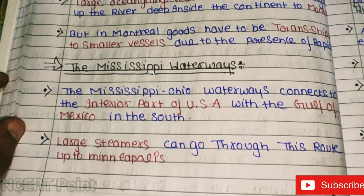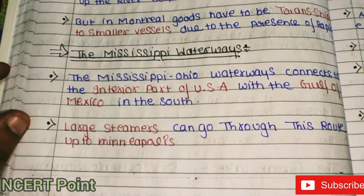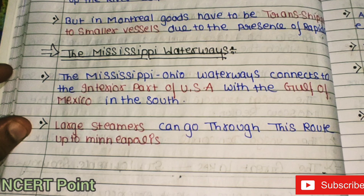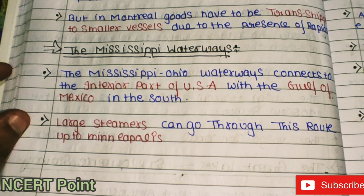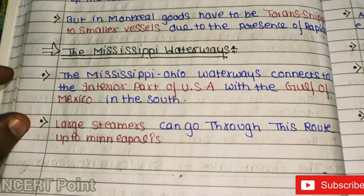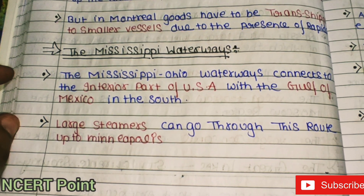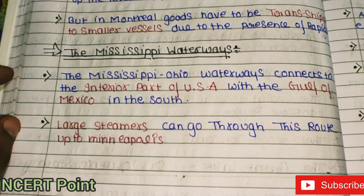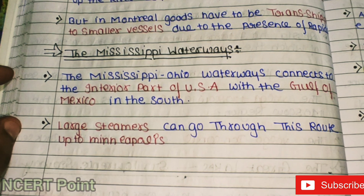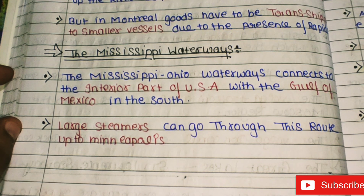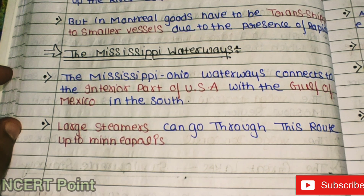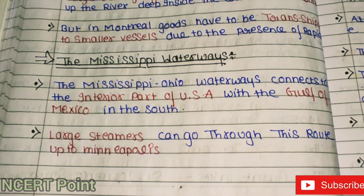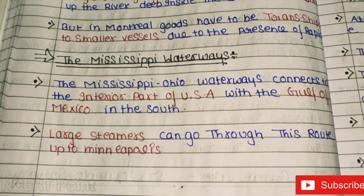The Mississippi–Ohio Waterways connect the interior parts of the USA with the Gulf of Mexico in the south. Large steamers can travel through this route up to Minneapolis.